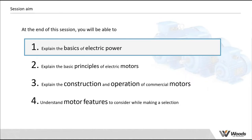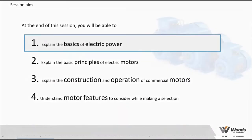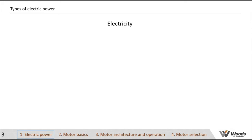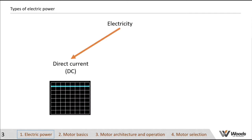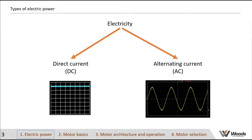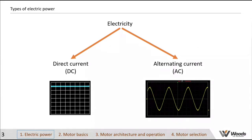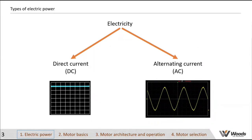Before we get into the motors themselves, it's worth touching on and getting a foundation of electrical power knowledge. There are two types of electricity: DC, direct current, and AC, alternating current. DC is essentially a flat line — current flowing in one direction. With alternating current it's flowing in both directions, one direction and then the other over time.